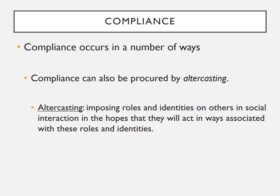Another way to procure compliance is through altercasting — when a person tries to impose roles and identities on others in social interaction, hoping these others will act in ways associated with those roles and identities. For instance, if someone wanted a devout Christian to give her money, she might say, 'Well, you're a good Christian — you'd help me out in a jam, wouldn't you?' By highlighting the Christian identity, the persuader imposes that religious identity hoping the person will act charitably. Teachers and professors also use altercasting, telling underperforming students 'I know you're a good student — I know you can do better,' in hopes of imposing a good-student identity to improve their performance.